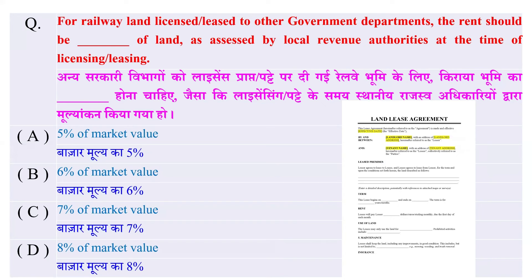For non-government departments — options are 6% of the market value, 7% of the market value, or 8% of the market value. And the right answer is 6% of the market value.